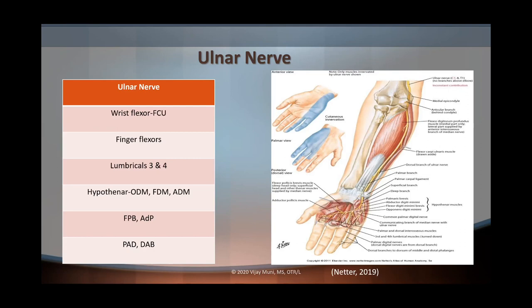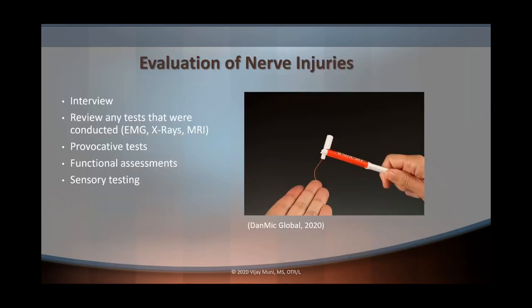I'm going to post this onto my website soon, so you'll see the PowerPoints as well as this video and you can follow along with it. When we're evaluating nerve injuries, we always want to perform an occupational profile. We always want to look at how did this nerve affect this person's ability to perform their daily occupations — does it affect dressing, grooming, bathing, or making a meal? We also want to review any tests that were conducted, such as an EMG test, x-rays, or an MRI.